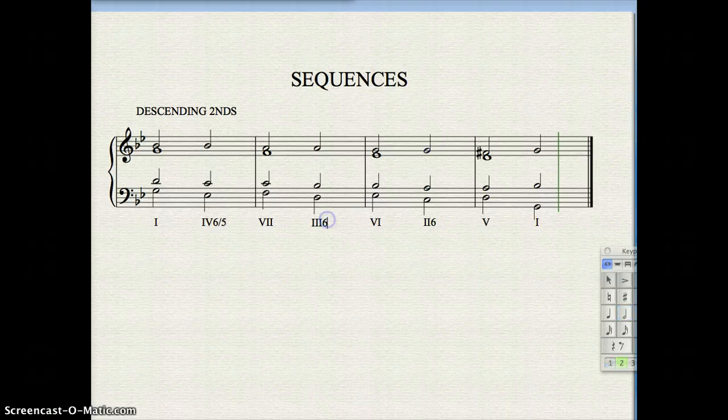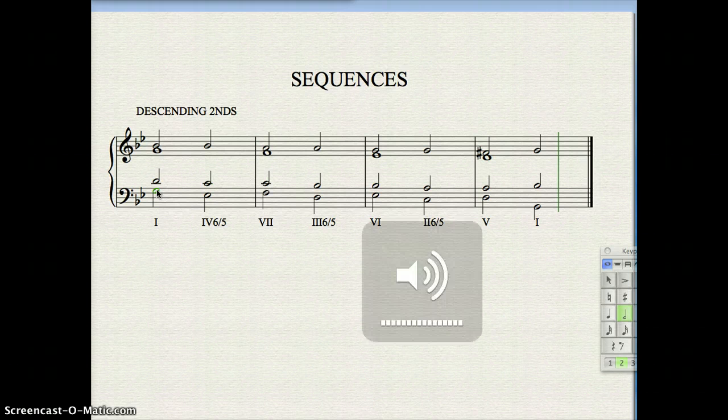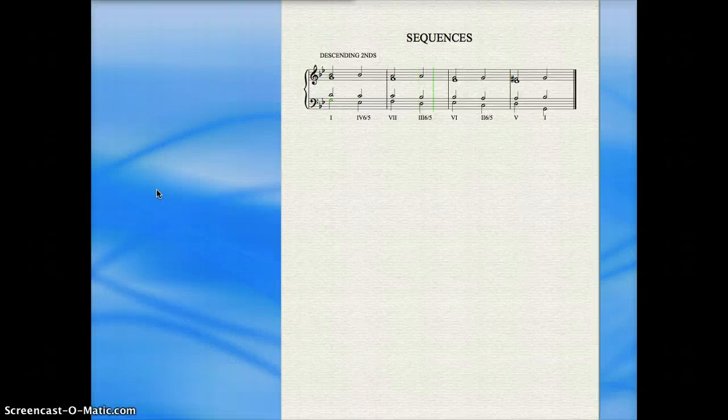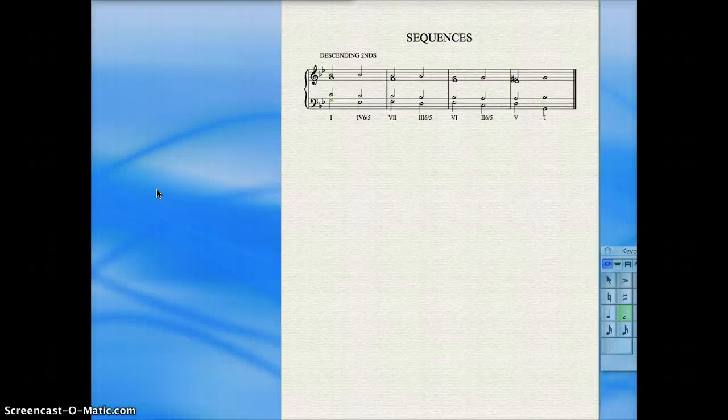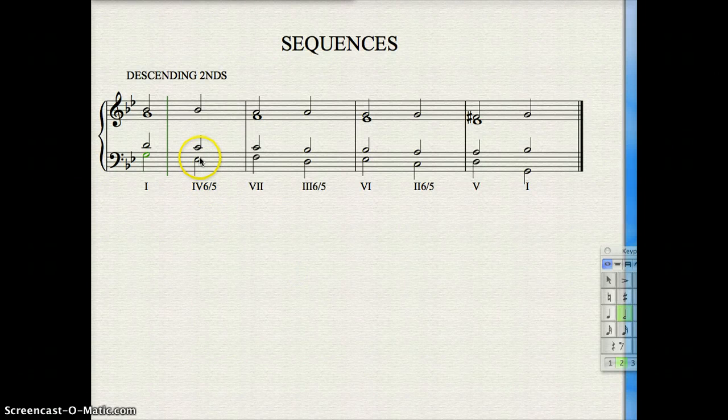So 3-6-5. So when you do these, you can have every chord be a 7th, or you can have every other chord be a 7th chord. There's lots of variations of the descending fifth pattern. It's very malleable. That's why composers like it so much.